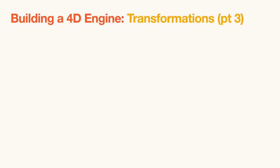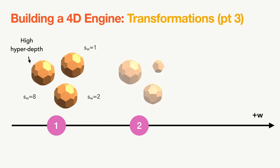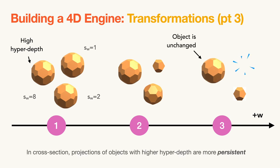Regarding scale, let's consider 3 objects and assign one of them a much higher hyper-depth than the others. As the viewer moves along W, the effect is that other objects will more rapidly exit the current cross-section, while the first one will remain unchanged. In this sense, we can see hyper-depth as a measure of how an object is resistant to change, or how much it is persistent.